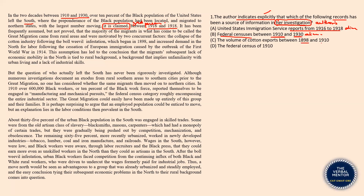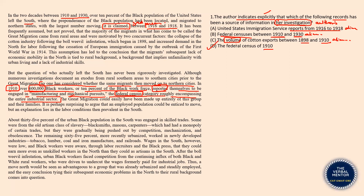Option C: the volume of cotton exports between 1898 and 1910— no mention of the volume takes place, so eliminated. Option D: the federal census of 1910. The author says no one has considered whether the same migrants then moved on to the northern cities. In 1910, over 600,000 black workers — 10% of the black workforce — reported themselves to be engaged in manufacturing and mechanical pursuits, the federal census category roughly encompassing the entire industrial sector. The author cites the federal census of 1910, which means this is a source the author has referred to. Option D is the answer.